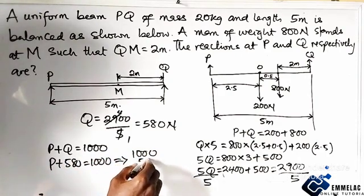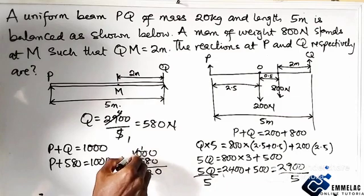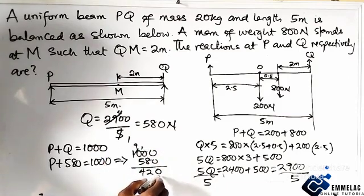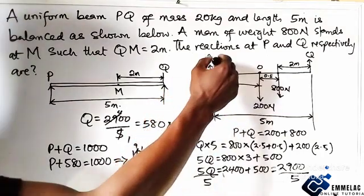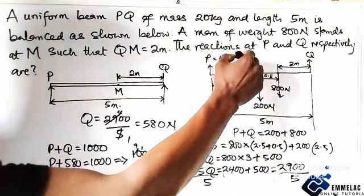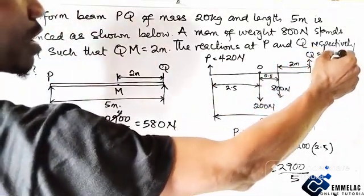So here P plus 580 equals 1000, which also implies that P equals 1000 minus 580, and this will give us 420.